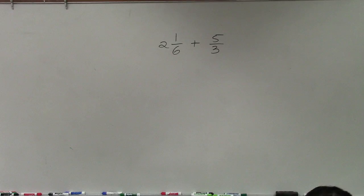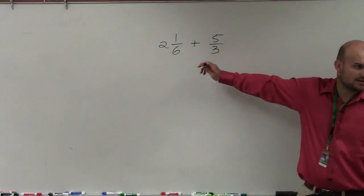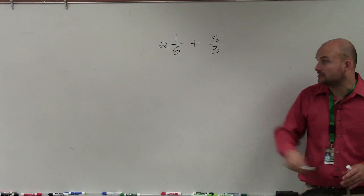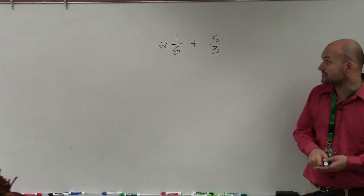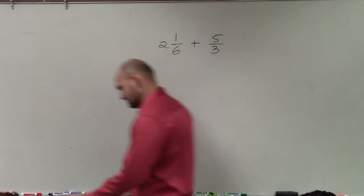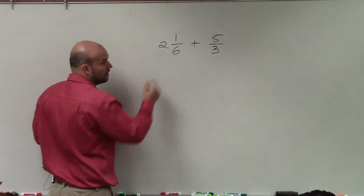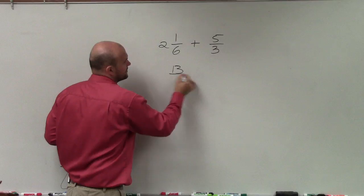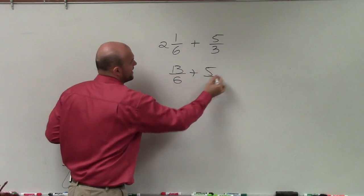I want to at least get something for you. So in this case, again, let's kind of go through this one a little bit quicker. Convert the mixed number to an improper fraction. So in doing that, I have 6 times 2, which is 12. 12 plus 1 is 13, over 6, plus 5 thirds.